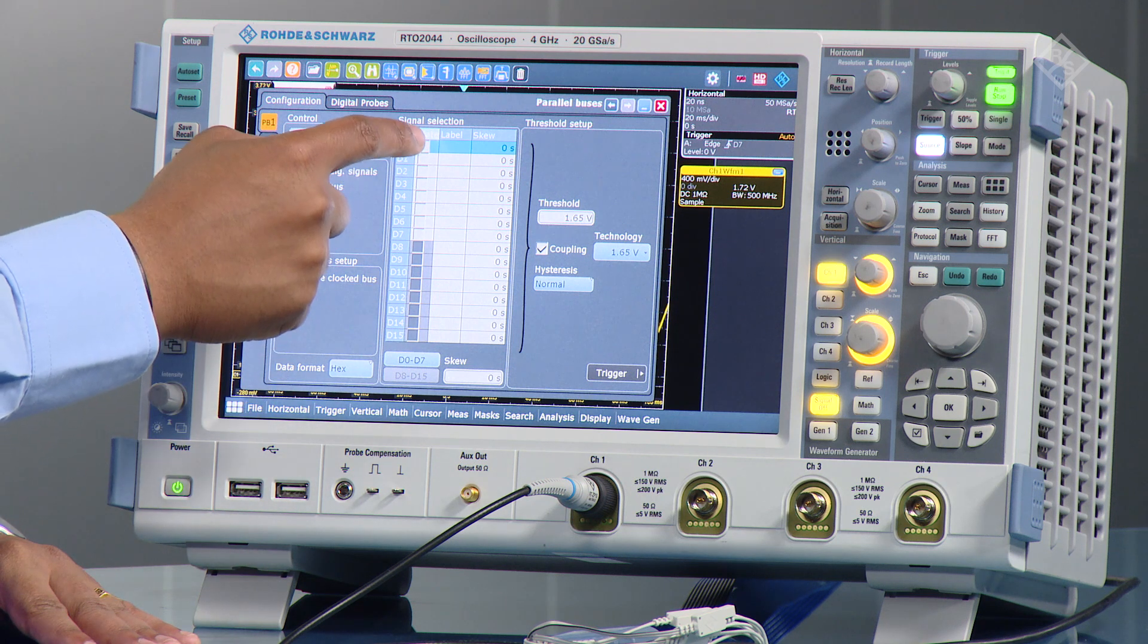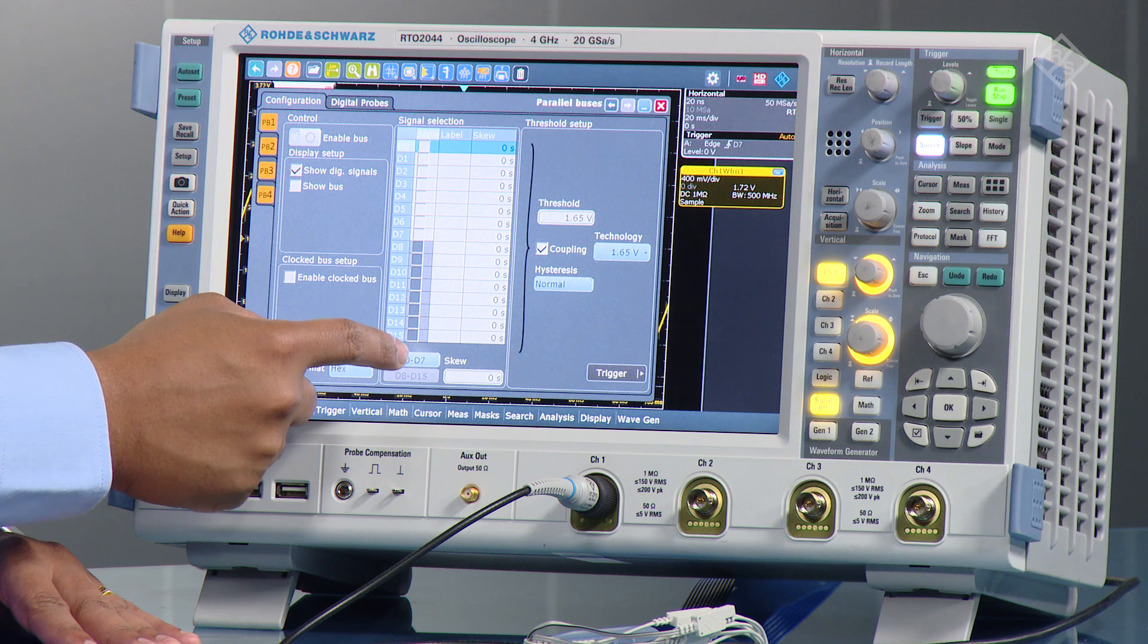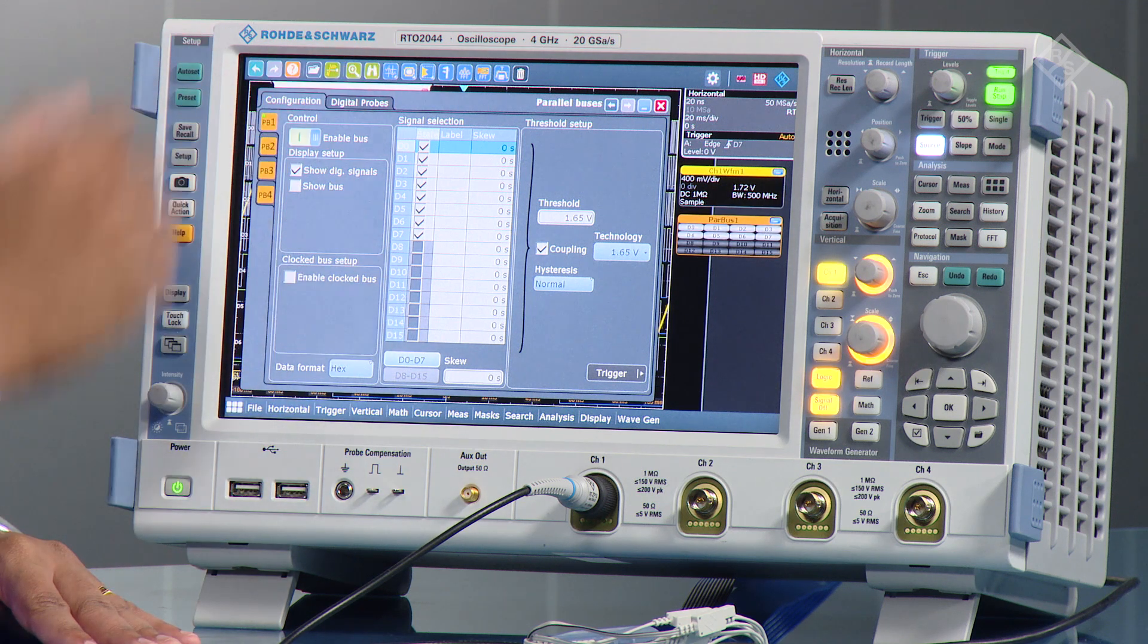And here you can individually enable each of the digital channels, or I'm going to quickly hit D0 to D7, and they get automatically enabled.